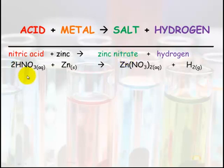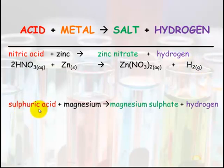We'll look at the formula: HNO3 plus Zn, so the zinc hooks up with the NO3 to make zinc nitrate, and the two hydrogens get left to make hydrogen gas. Another example: sulfuric acid plus magnesium makes magnesium sulfate and hydrogen gas.